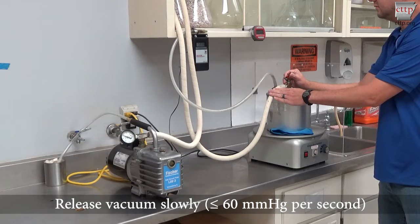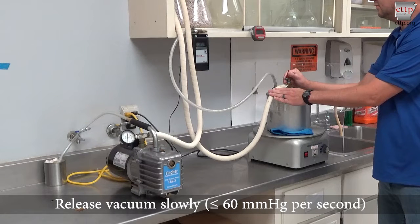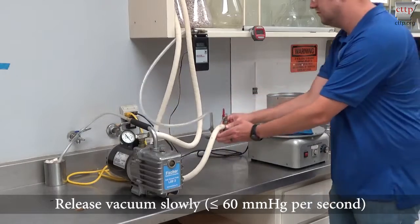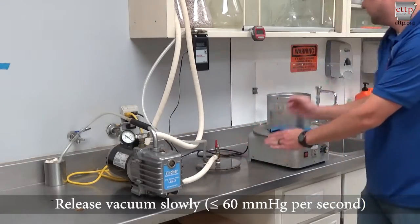Release the vacuum pressure slowly by opening the release valve at no more than 60 millimeters of mercury per second. At this rate, it takes about 12 seconds to return to normal atmospheric pressure.